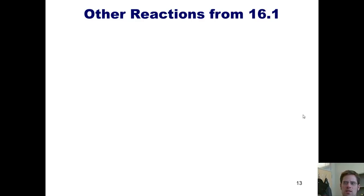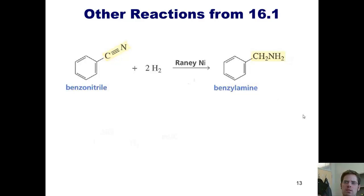In our first reaction, you'll see that we can treat a nitrile, such as benzonitrile shown here, with hydrogen gas and a special catalyst called Raney nickel. This completely hydrogenates or reduces the triple bond to give us benzylamine. By comparison, we can also reduce the nitro group in nitrobenzene to an NH2 using hydrogen gas and palladium. This compound, you might remember from Chapter 15, is called aniline.